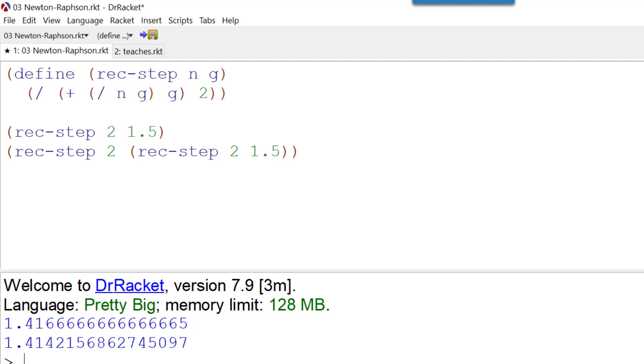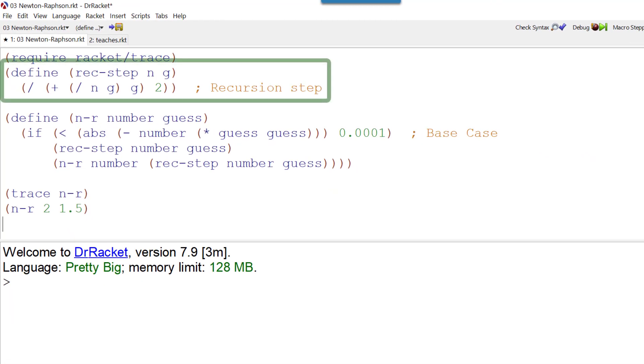We've got that recursion step the way we want it. But we can make this a little more interesting still by adding in that part that does the base case. Now here we have the rec-step that we've just tested. We know that that works. And now what we're doing is defining the function nr, the Newton-Raphson method. And that accepts two parameters, number and guess.